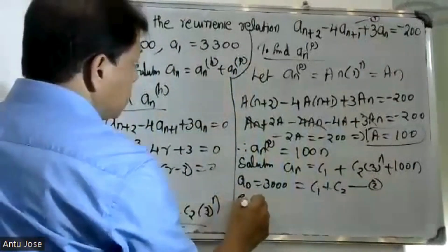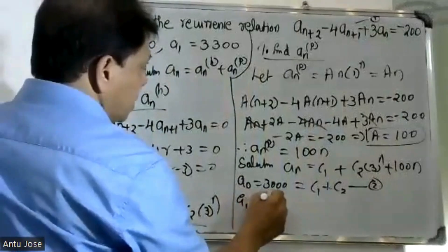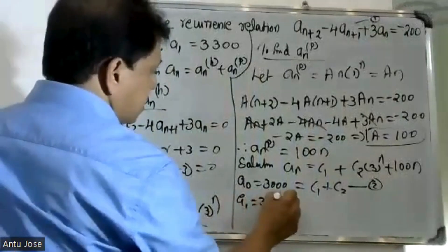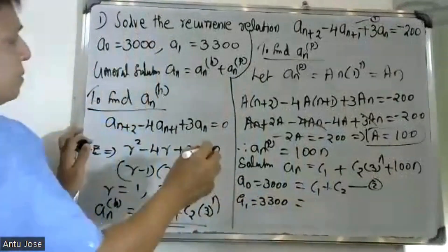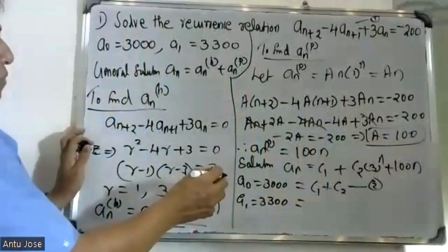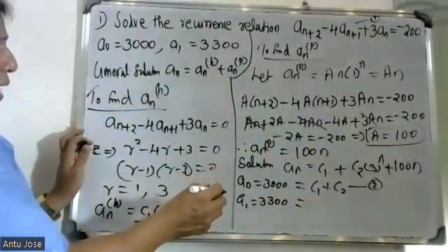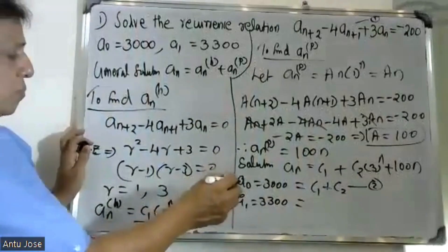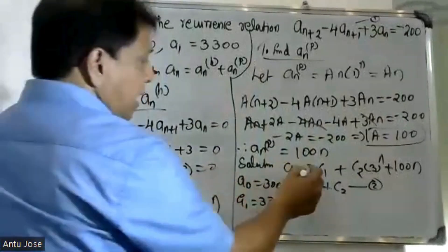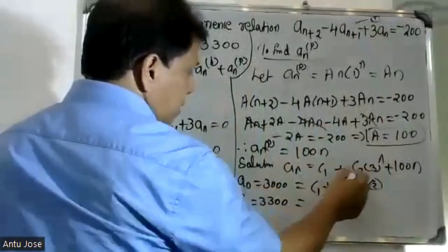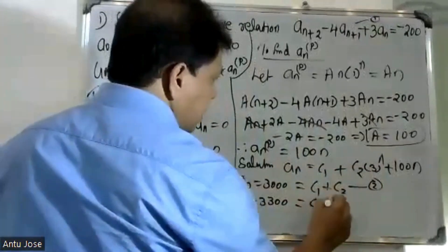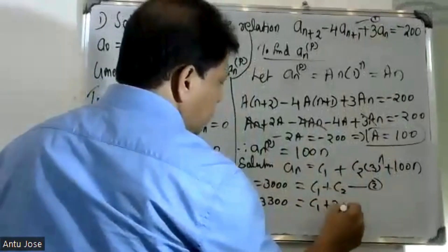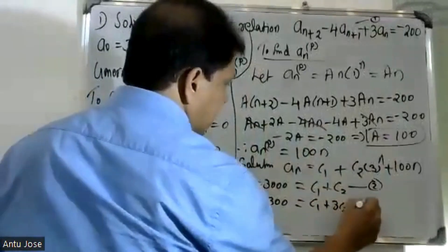Applying initial condition a(1) equals 3300: C1 plus 3·C2 plus 100 equals 3300, so C1 plus 3·C2 equals 3200.